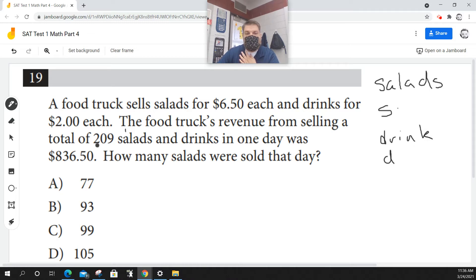When it says 209 salads and drinks, basically I don't know how many salads I sold and I don't know how many drinks I sold, but I know I sold 209 of them. So when you have two unknowns, in order to solve the system, you need two equations.